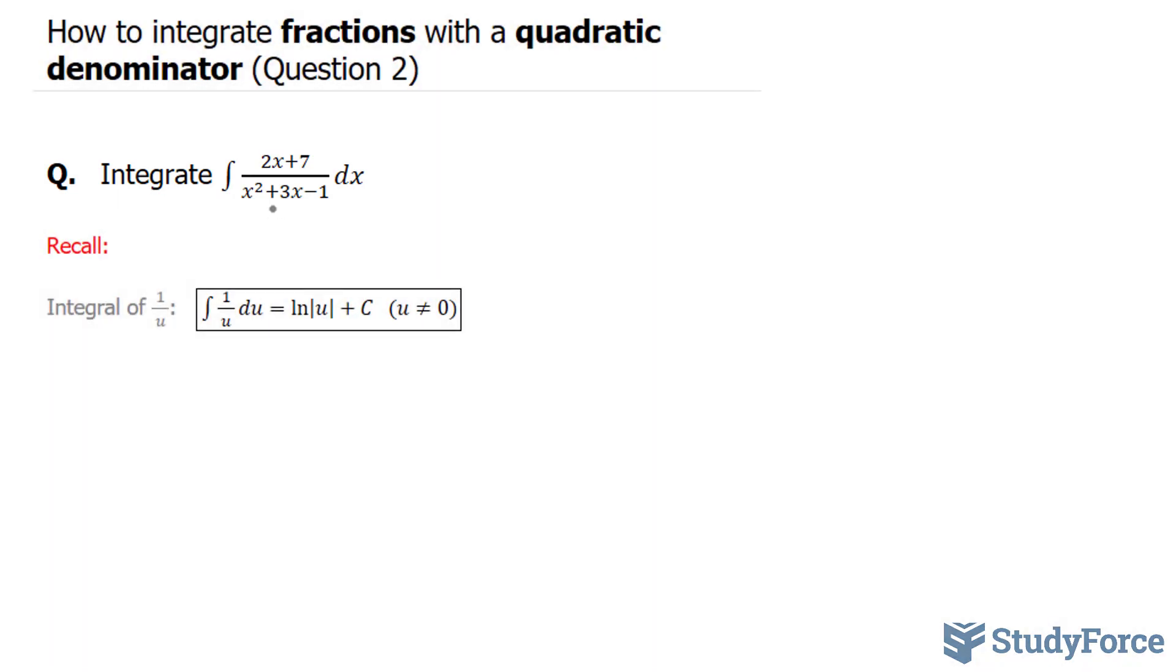The difference between this function and the one we worked on in question 1 is that this function has a binomial with a variable in the numerator, 2x plus 7. However, the denominator is still the same, x to the power of 2 plus 3x minus 1. So we may need to use some information that we found in question 1 to answer this.